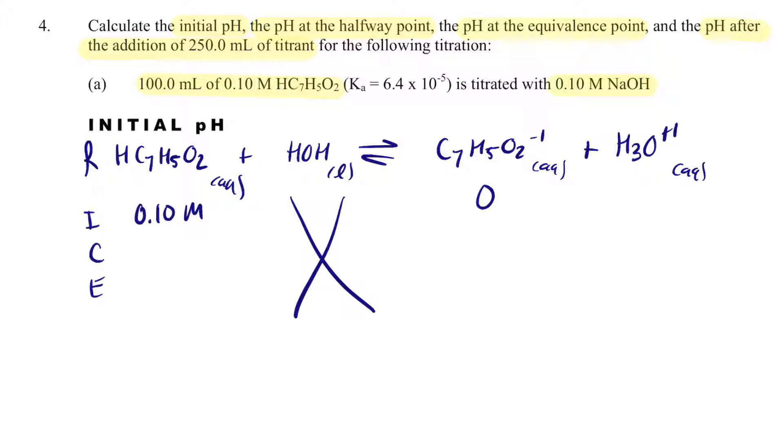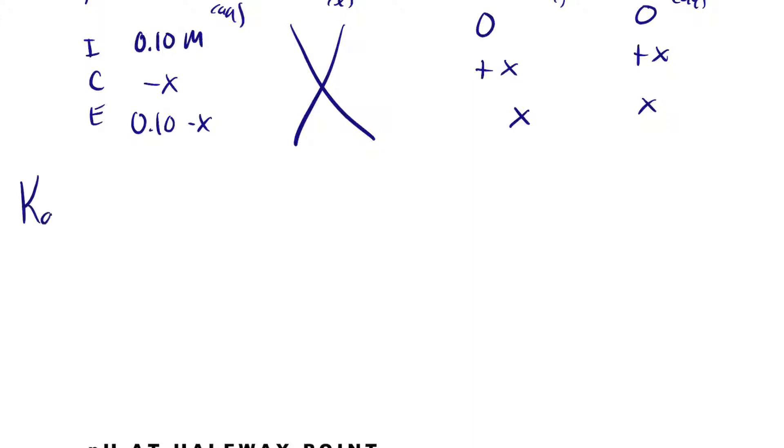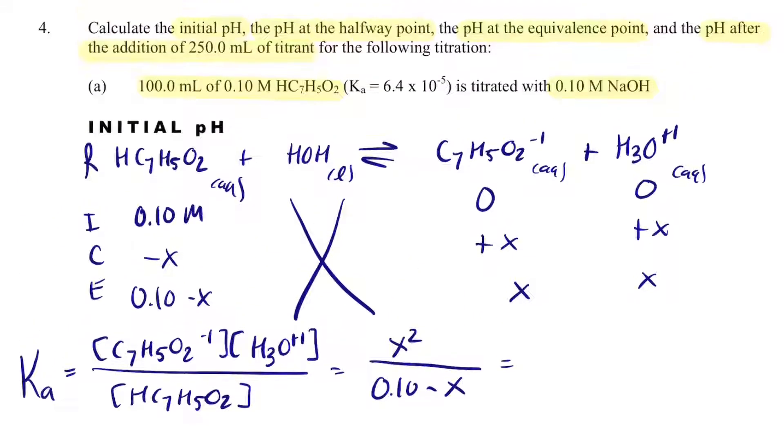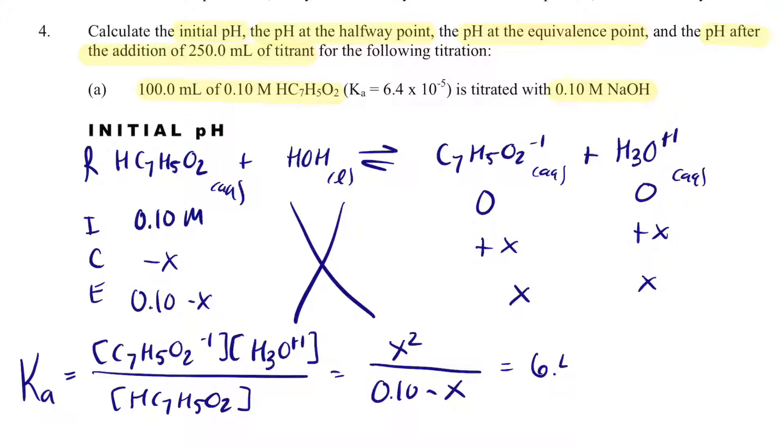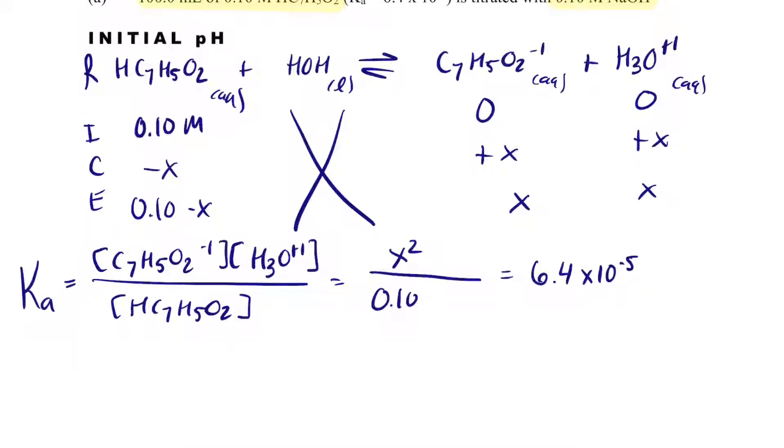The initial concentration of benzoic acid is 0.10 molar. Water is just an X, 0 and 0, minus X, plus X, plus X, 0.10 minus X, X, and X. So I can say KA is equal to C7H5O2 minus one times H3O plus one, divided by HC7H5O2, which equals X times X, which is X squared, divided by 0.10 minus X. And that equals KA, and they do give us KA, 6.4 times 10 to the minus 5. 5% rule says I can get rid of minus X, so long as there's still an X there. And when I get X, X for this problem is 2.53 times 10 to the minus 3.